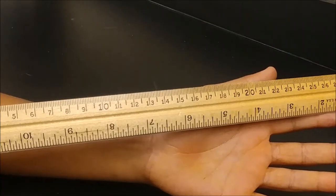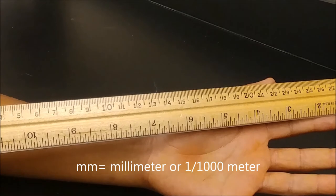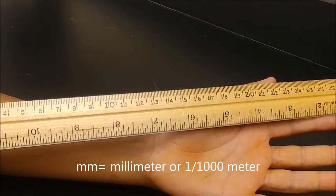What does MM stand for? MM stands for millimeters, which is one of the smaller metric units for length or distance.